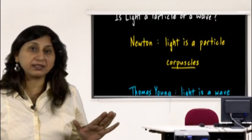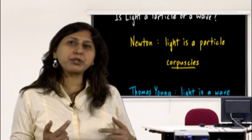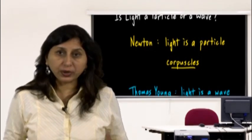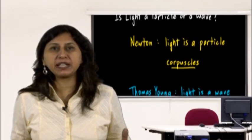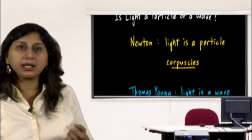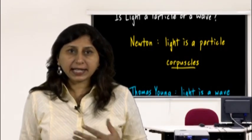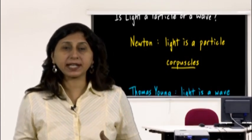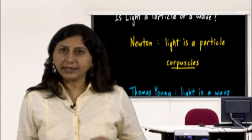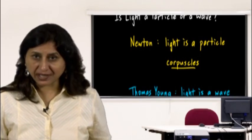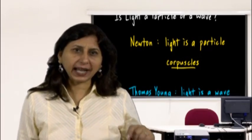Summary: Newton had said that light is a particle, and Thomas Young came along and said it was a wave. Young's experiments in the 1800s, along with many subsequent experiments, showed that light was a wave, and people gradually began to disbelieve Newton's particle theory. Then in 1905, another physicist performed an experiment — the photoelectric effect — that clearly demonstrated that light is a particle.